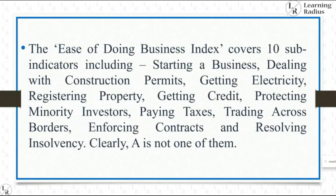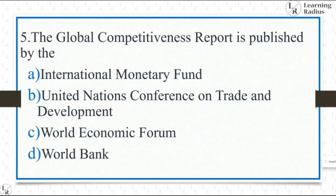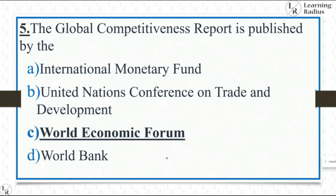The fifth 2019 question: The Global Competitiveness Report is published by — a very easy and direct question. It is not by the International Monetary Fund, not by UNCTAD, not by the World Bank. The Global Competitiveness Report is published by the World Economic Forum.